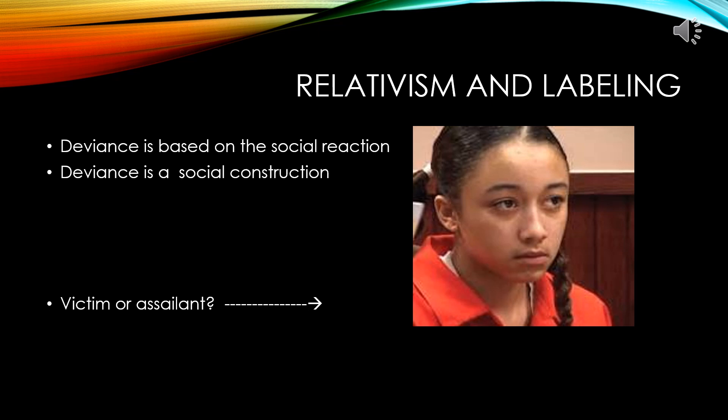Here we have a picture of Cyntoia Brown, who got a lot of media coverage about a year ago. She was a child of a mother with major drug problems, essentially fending for herself, and ended up being human trafficked as a young girl to perform sexual acts for older individuals. While with one of these individuals she feared for her life, she shot him and he died. The case treated this as a criminal act without considering that she was a child being preyed upon, and she was still held responsible.